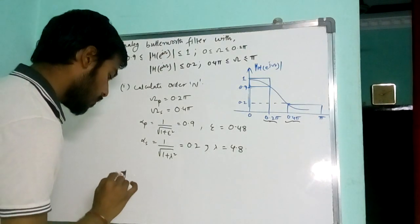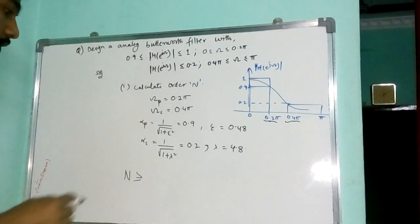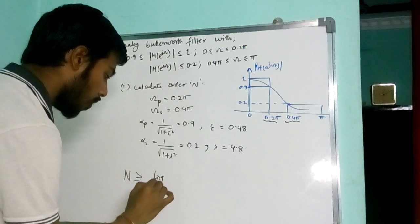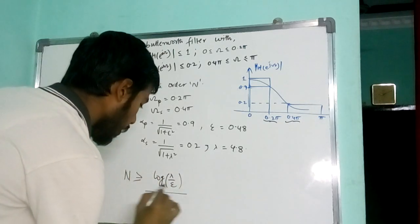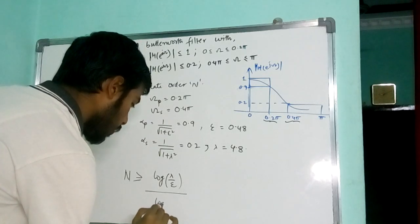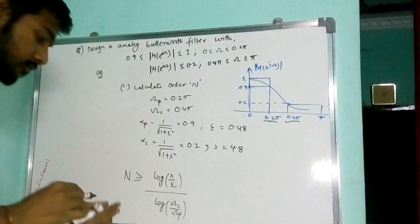Now we know that the Butterworth filter order is given by N less than or equal to log lambda by epsilon by log omega s by omega p.